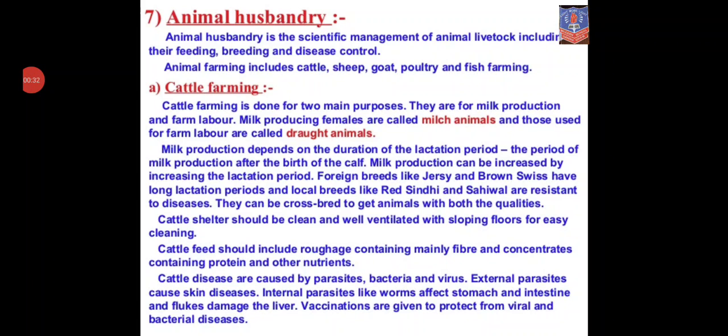Let us first discuss what do you mean by animal husbandry. Animal husbandry is the scientific management of animal livestock including their feeding, breeding and disease control. Animal farming also includes cattle, sheep, goat, poultry and fish farming. These all things are done in animal husbandry. Let us go for cattle farming first.